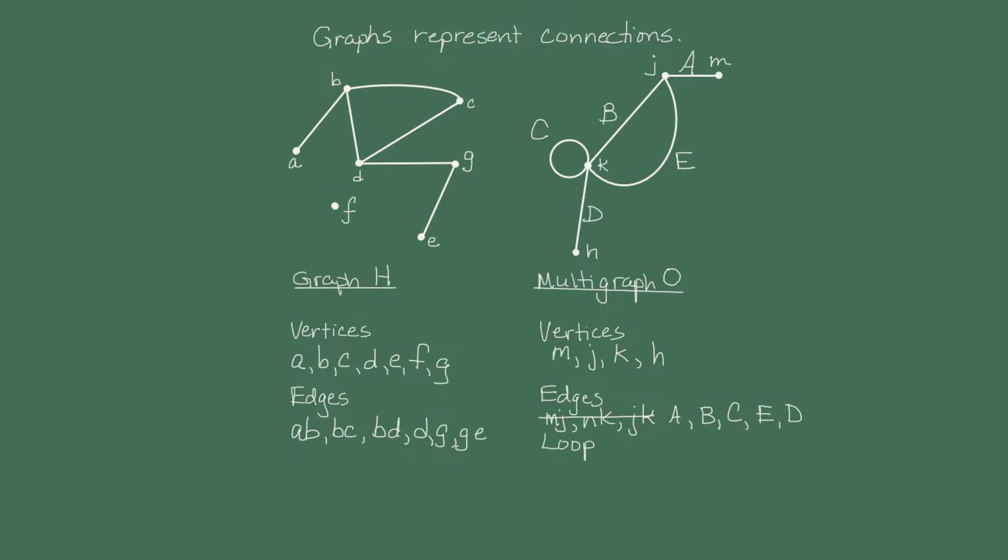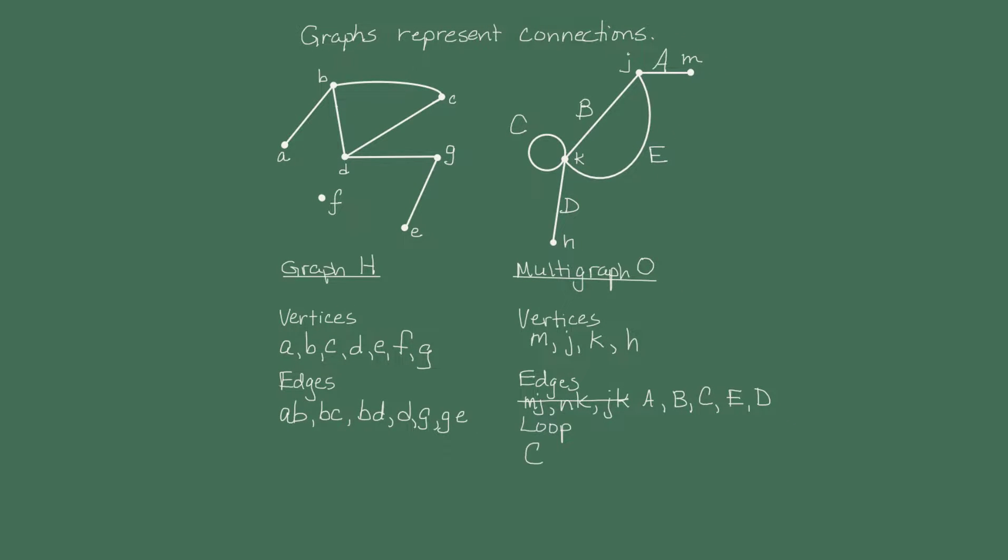Multigraph O also has a loop, which is edge C, which connects vertex K to itself, a characteristic you won't see in a simple graph by definition.